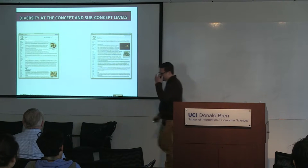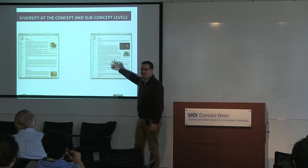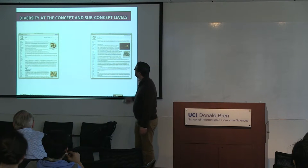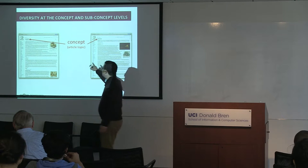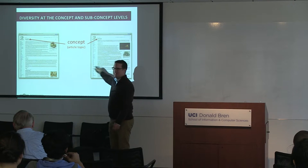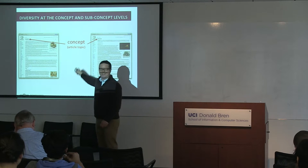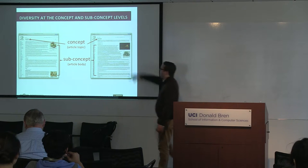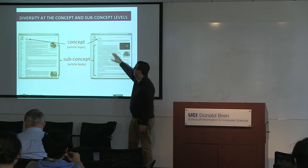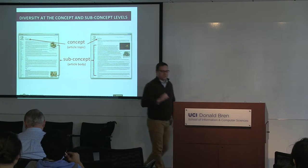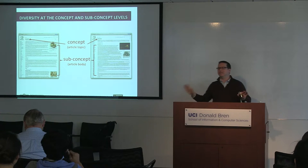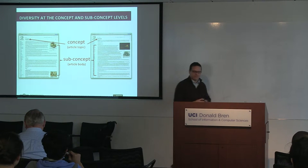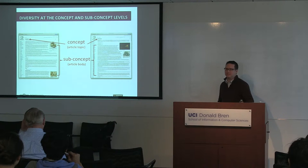Before getting started, some terminology. These are Wikipedia pages — chocolate in Swedish and in English. I'll talk about concepts, meaning whether the article topic exists in a given language. But there's also subconcept diversity — what's actually being written about in the article body. We'll do studies looking at both: concept diversity (does it exist in the language editions?) and subconcept diversity (if it exists in multiple languages, is it being written about in the same way?).